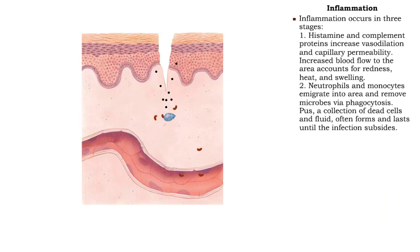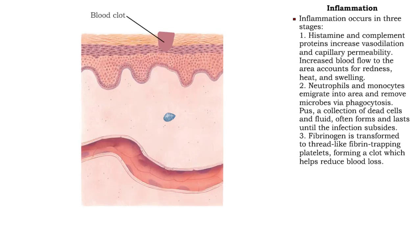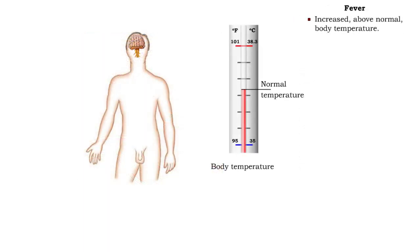The third stage is tissue repair. Fibrinogen, a clotting protein, is transformed into a meshwork of thick, insoluble fibrin threads, forming a clot. The clot becomes a scab. New cells come together under the scab, mending the wound, and helping the tissue regain its normal structure and function.